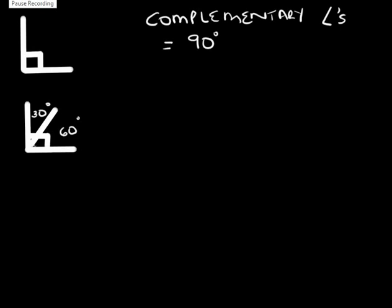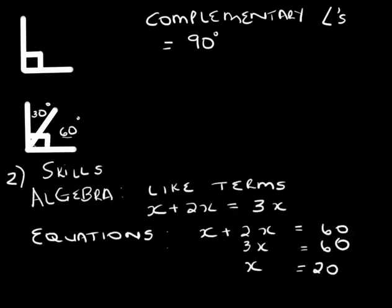Complementary angles add up to 90 degrees. So if we look at this example here, if this angle is 60 degrees, then the other one will be 90 minus 60, which is equal to 30 degrees.